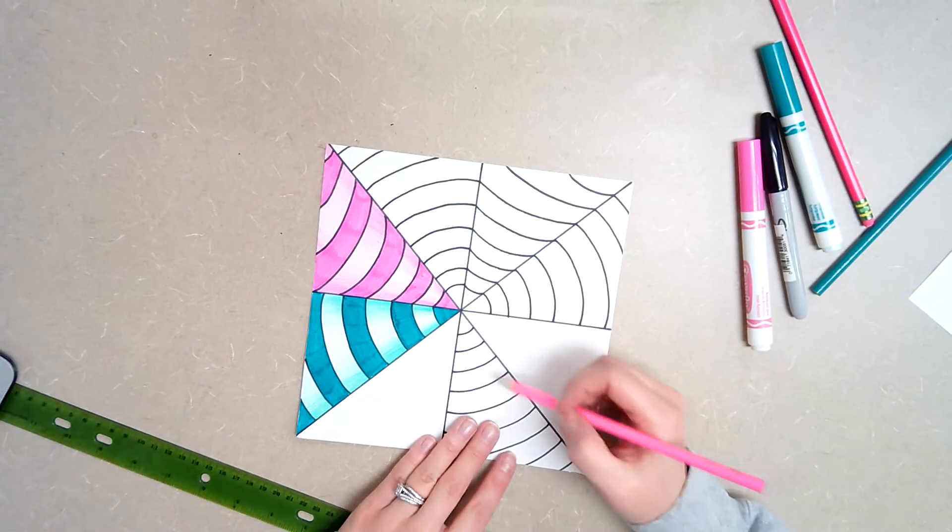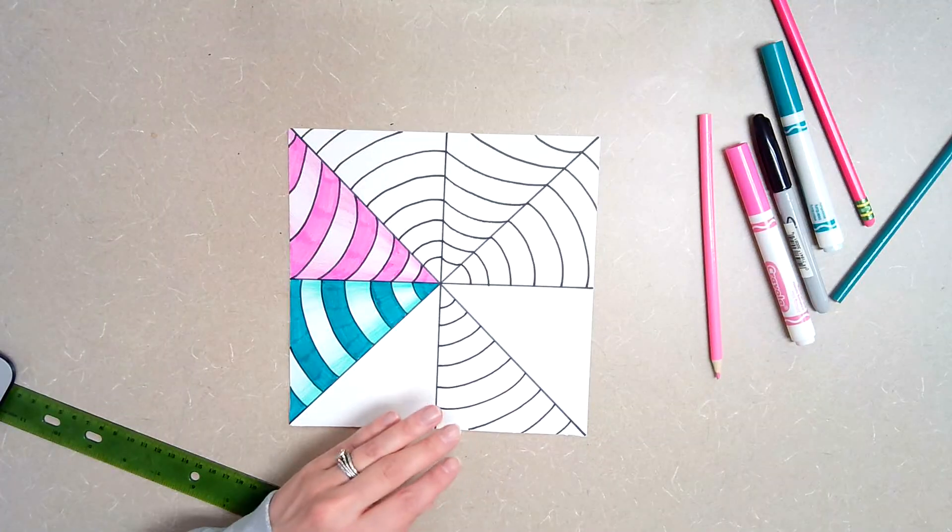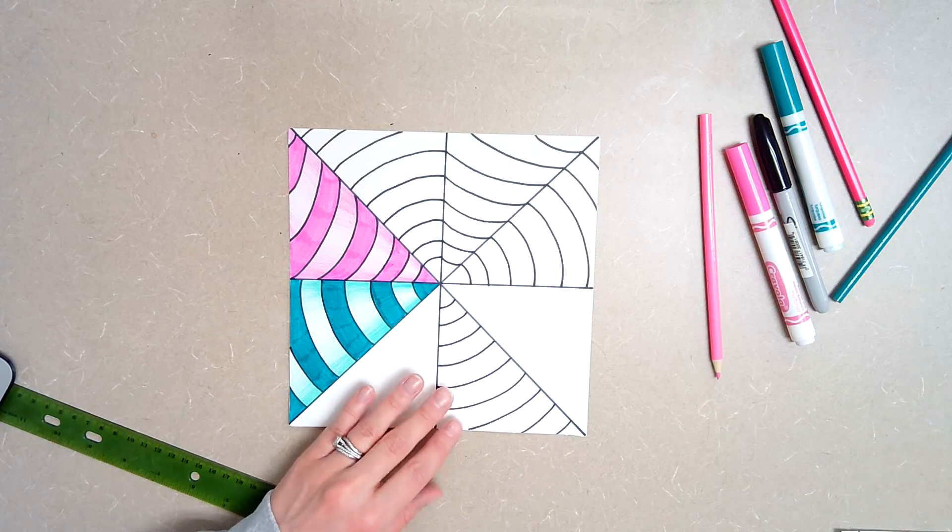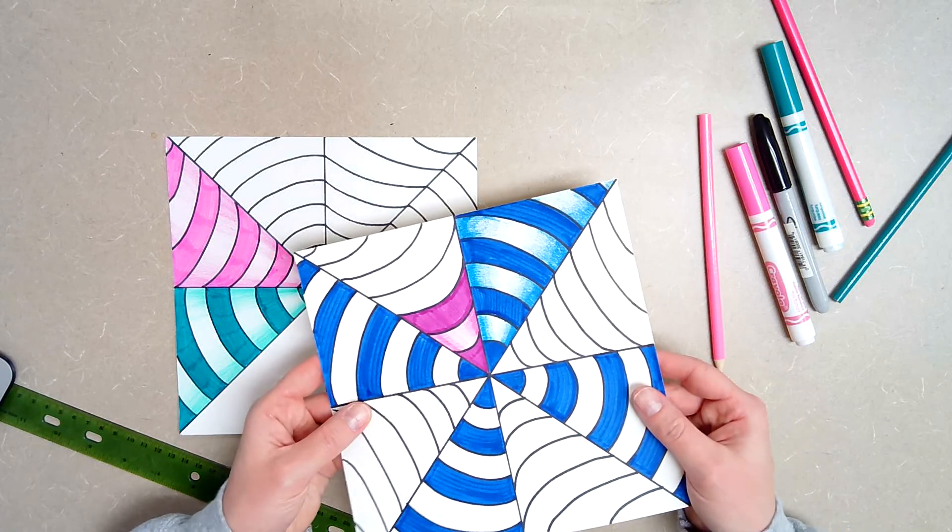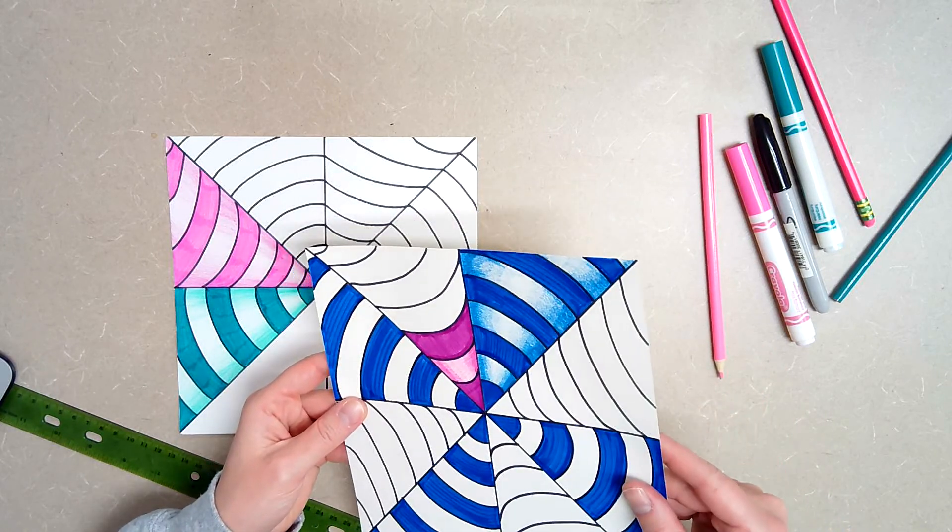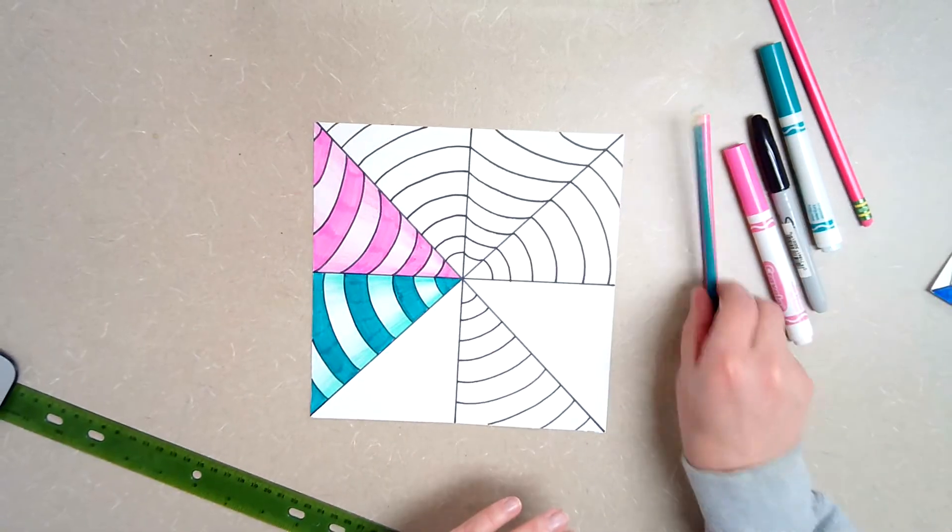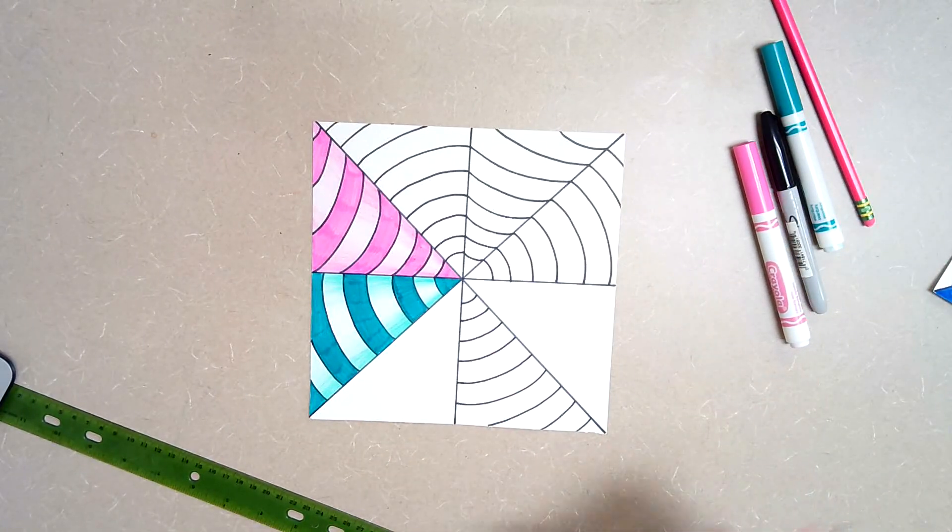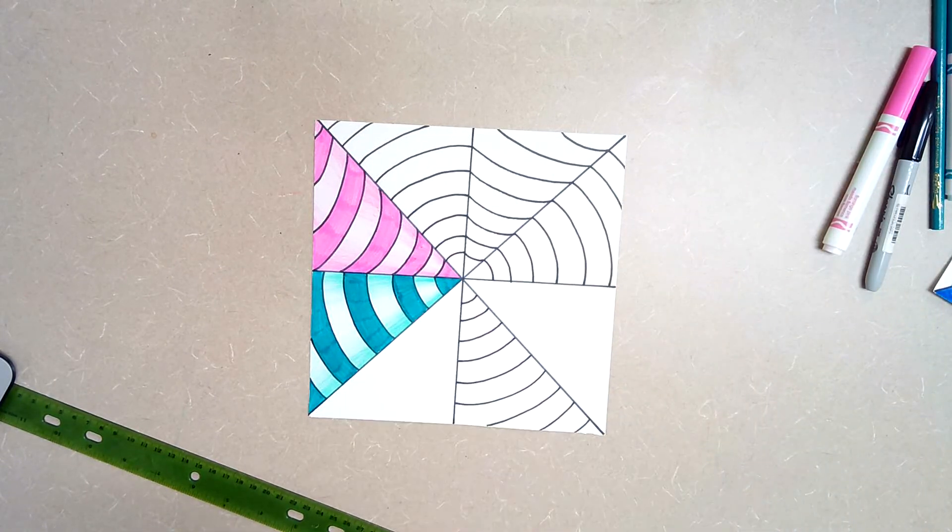And so when you're done your whole paper should be filled in. All of these pie pieces should be colored in. I have another example here where I used like a darker blue. So you can kind of see the value scales on that one a little bit nicer as well. So this is the project we are going to be working on for a while. Please take your time. Do a nice neat job. Once this whole sheet is filled in, it should look like a pattern and it should show value as well as an optical illusion.